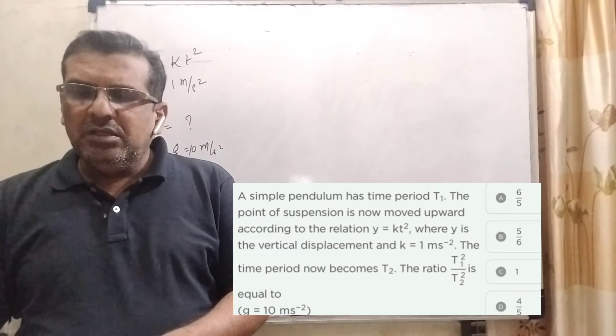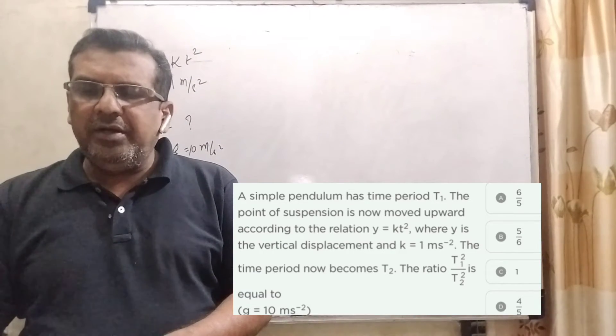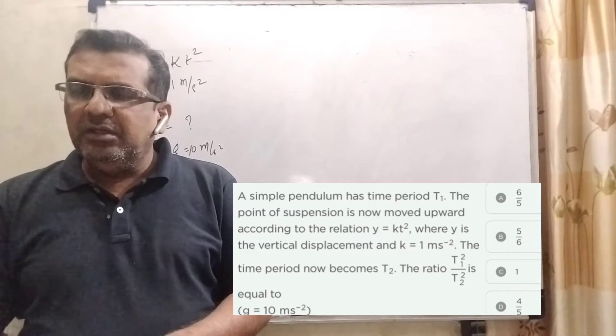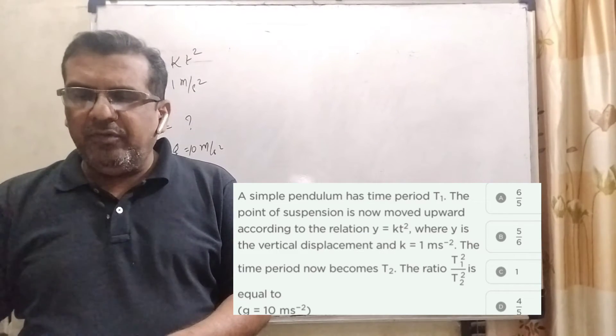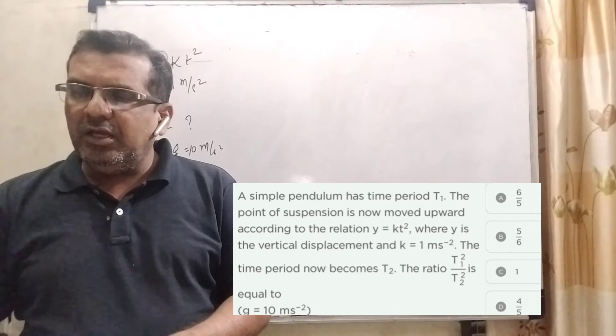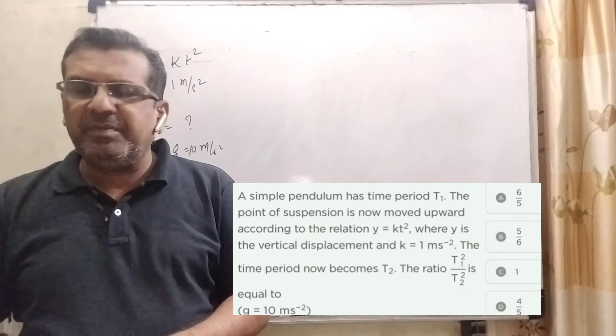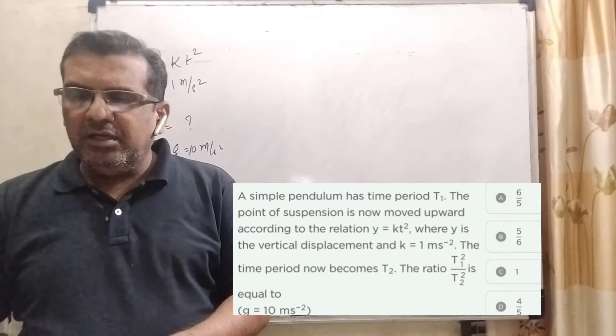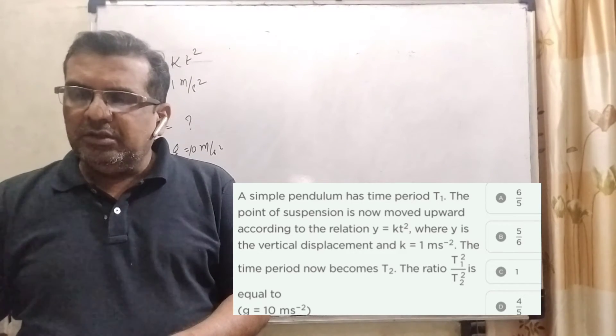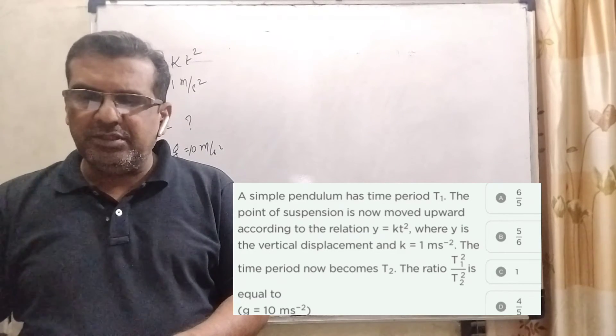Now, here is the question. A simple pendulum has time period T1. The point of suspension is now moved upward according to the relation y equal to kT square, where k equal to 1 meter per second square, where y is the vertical displacement. The time period now becomes T2. The ratio of T1 square upon T2 square is, here we have given four options.